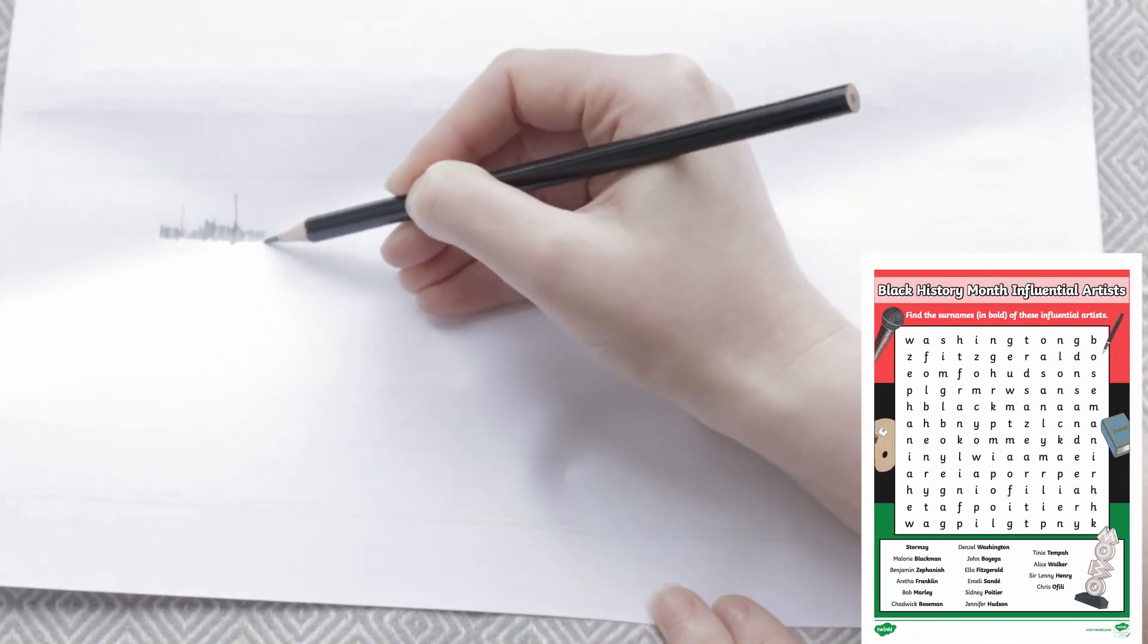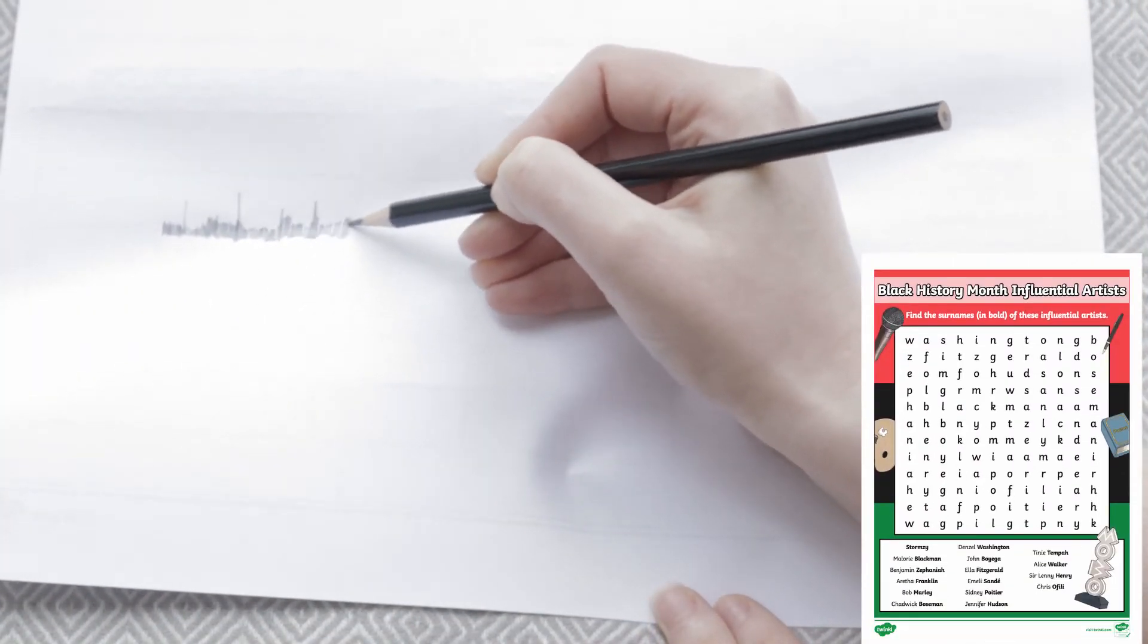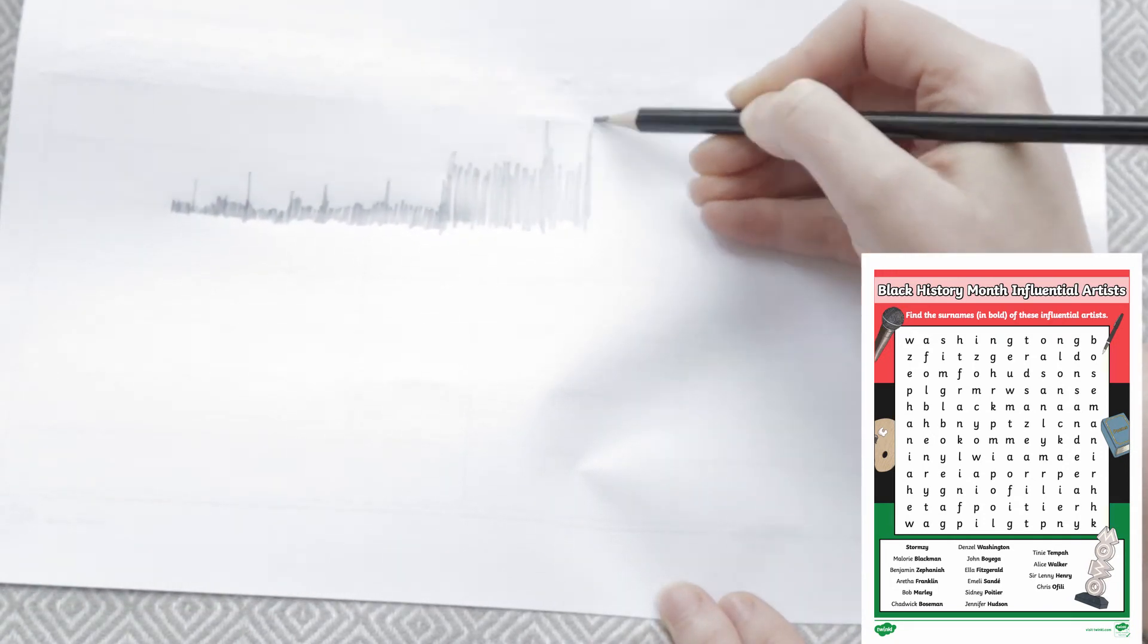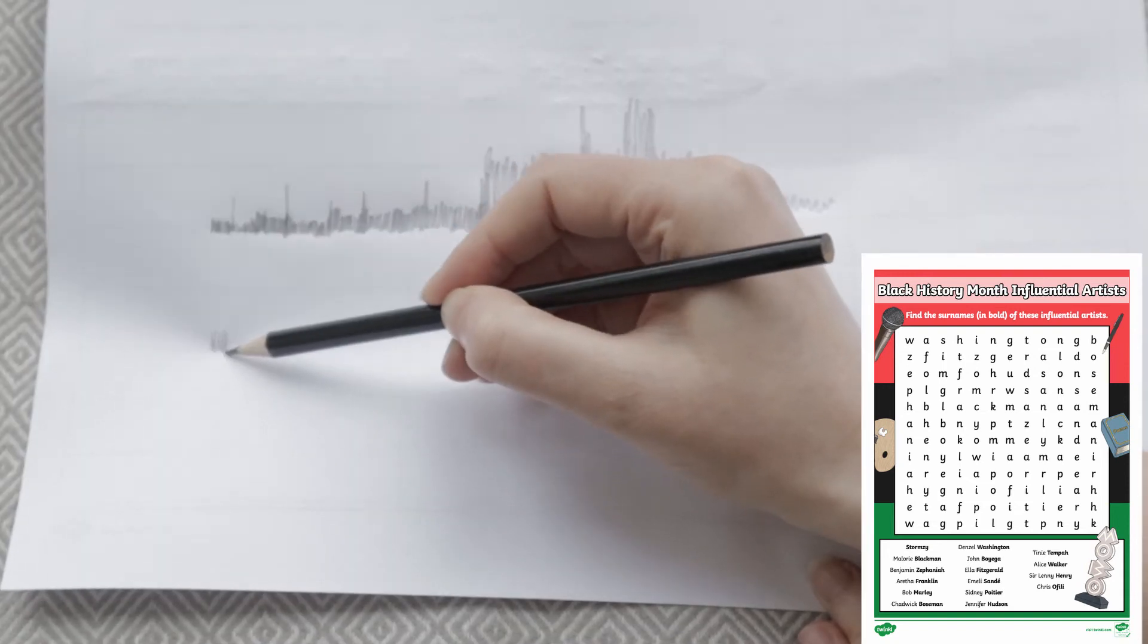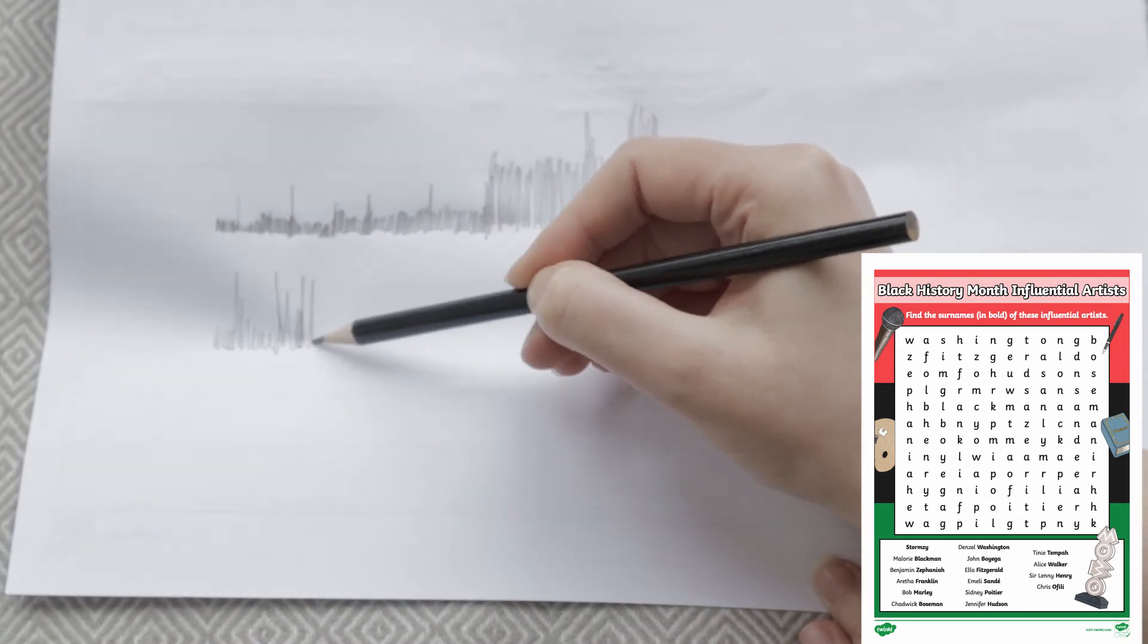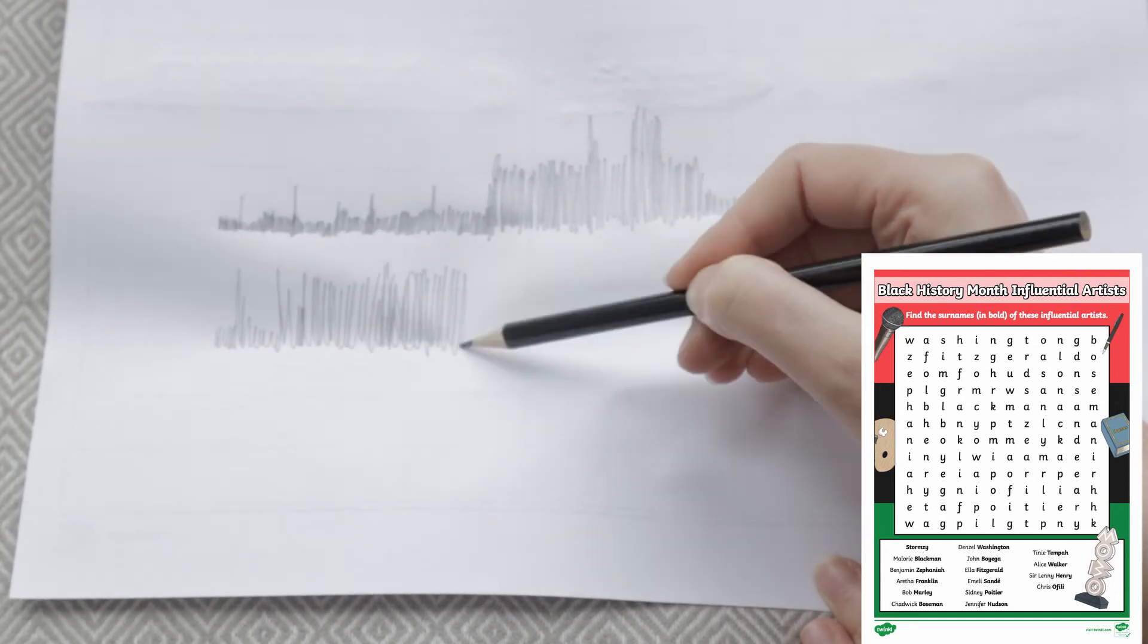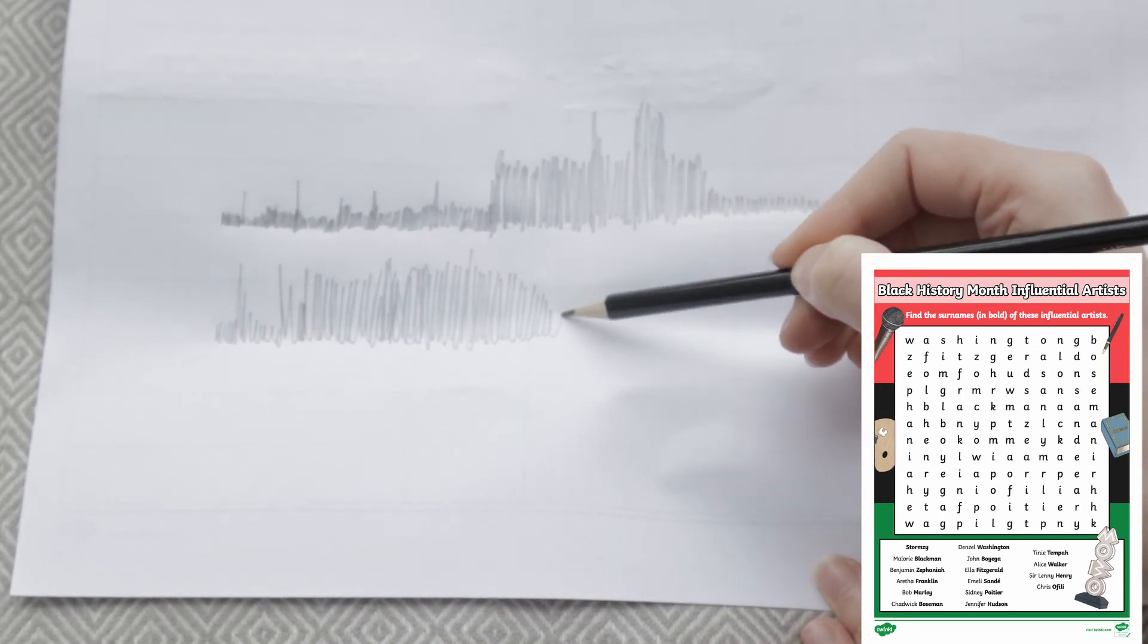Why not use the Black History Month influential artists word search to inspire a music lesson. Children can listen to the music of the musicians within the word search and investigate pitch. They can record what they think the pitch sounds like and compare each song's pitch with one another.